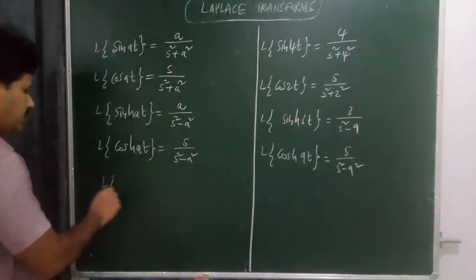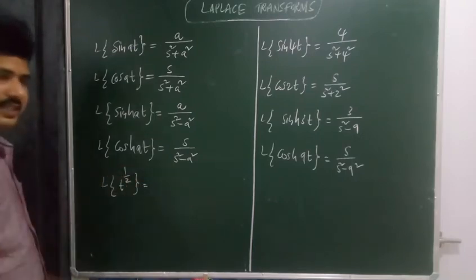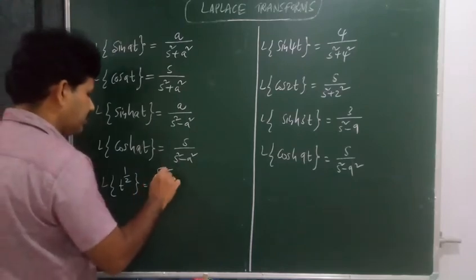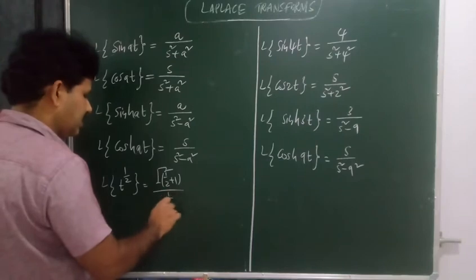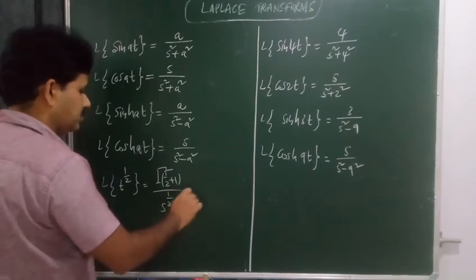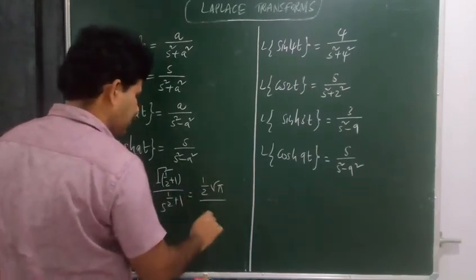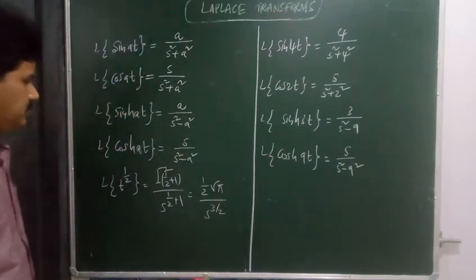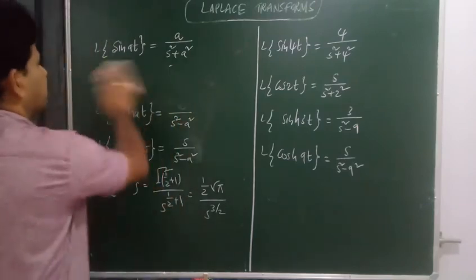Laplace transform of t to the power 1/2: here n is 1/2, so using gamma of n plus 1 over s to the power n plus 1, gamma of 3/2 equals (1/2) root pi, giving (1/2) root pi over s to the power 3/2. That is the Laplace transform of t to the power 1/2.